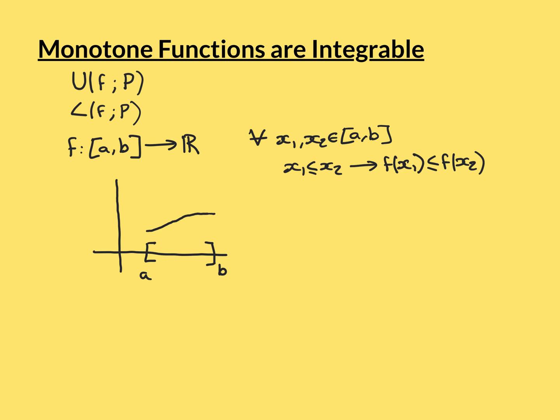A picture is quite helpful for this concept. Here is our interval [a, b], and here is what the function is mapping each of the points in the interval onto. Monotonically increasing means that as you increase in the domain, the value you're being mapped onto by the function either stays the same or it goes up — it never goes down.